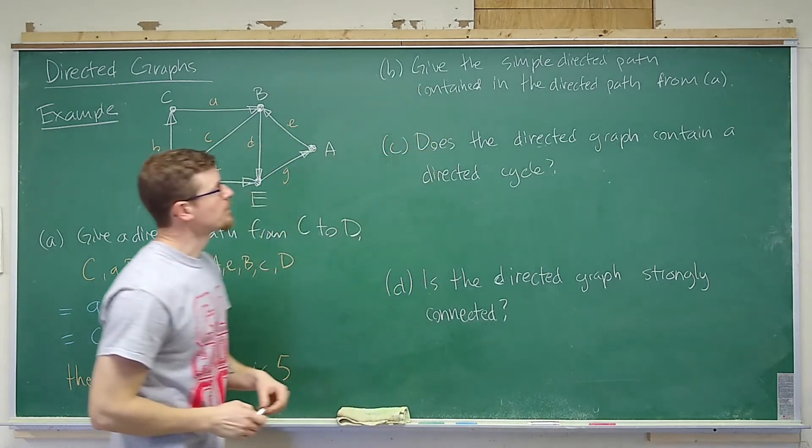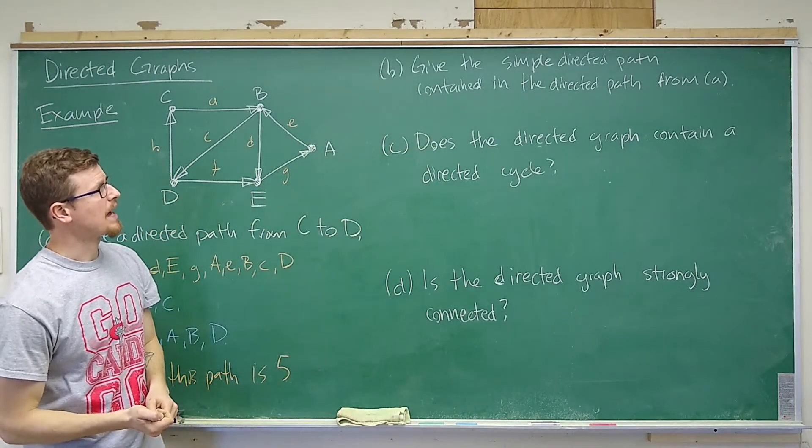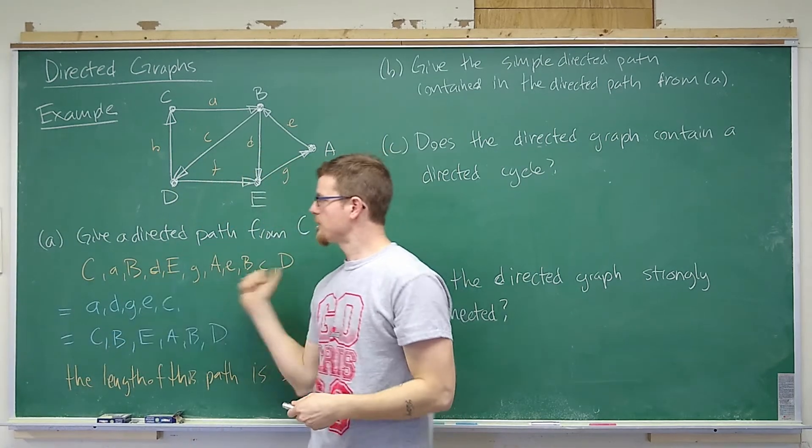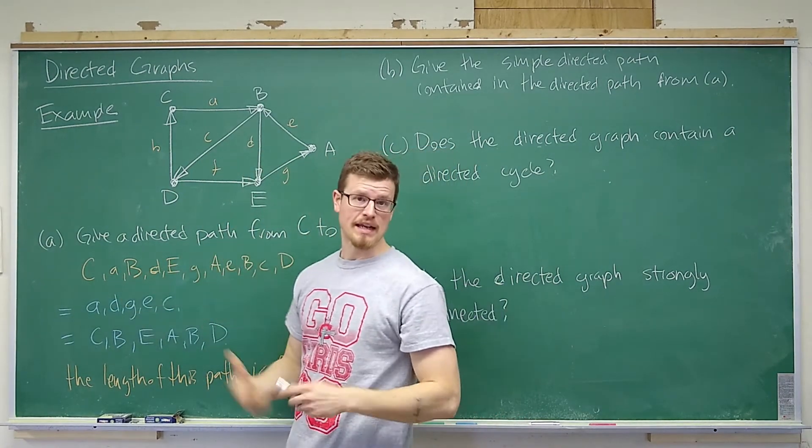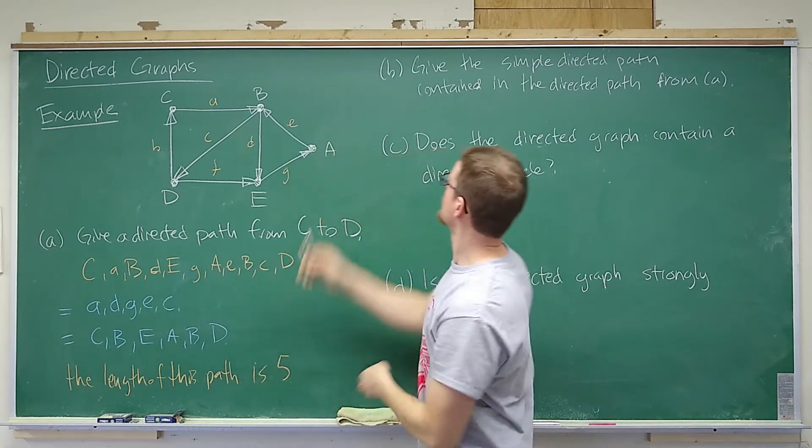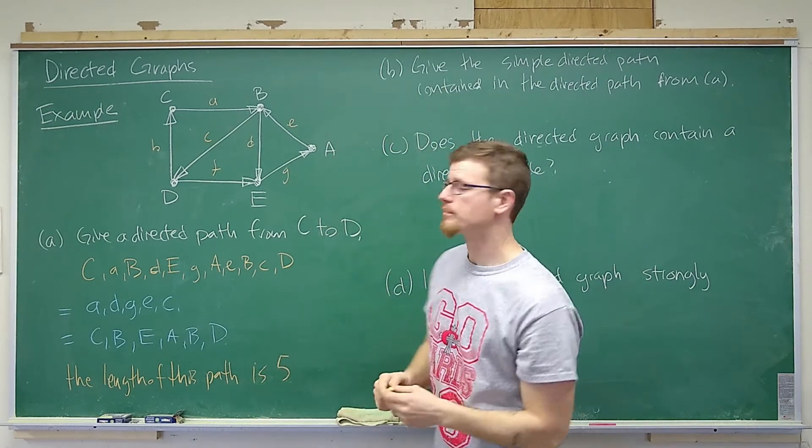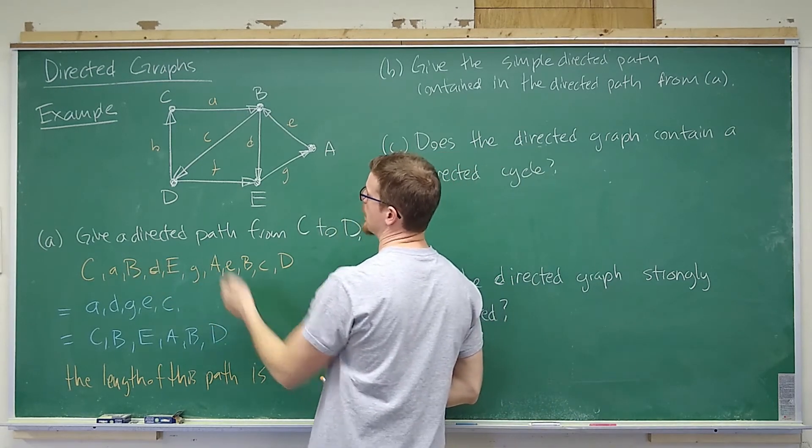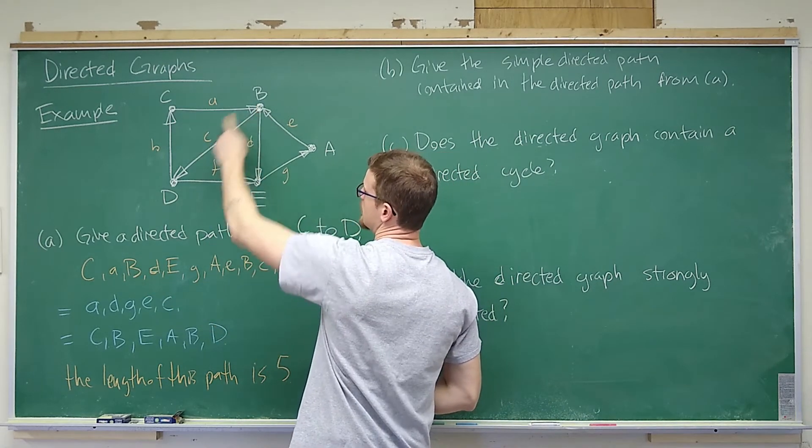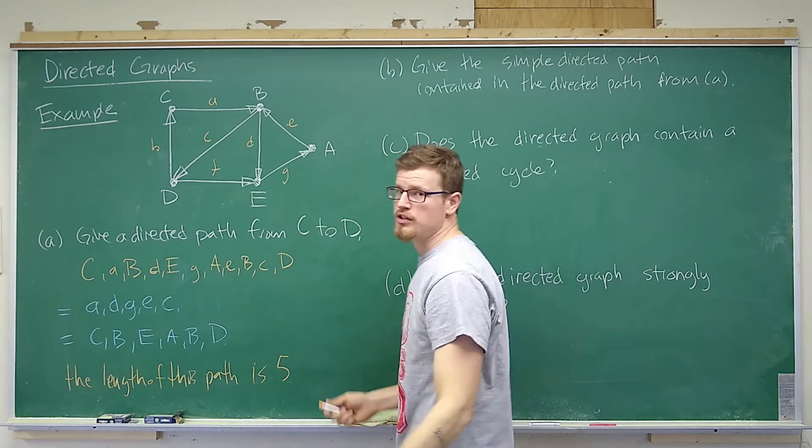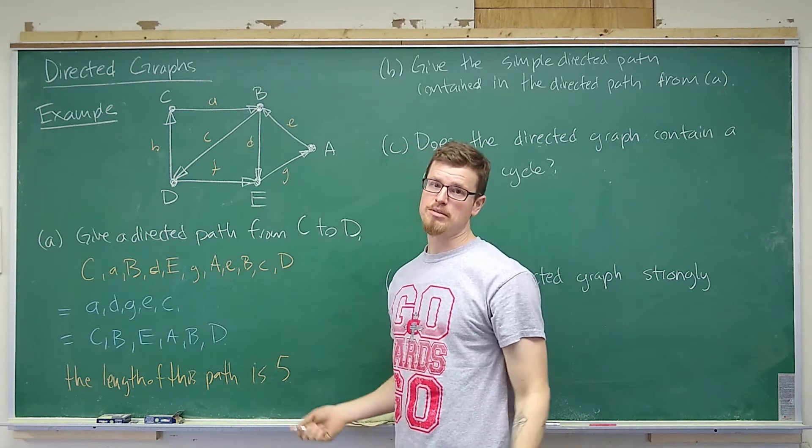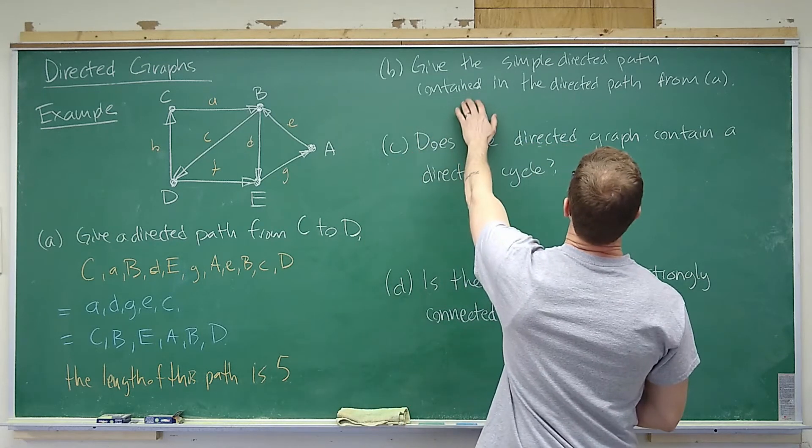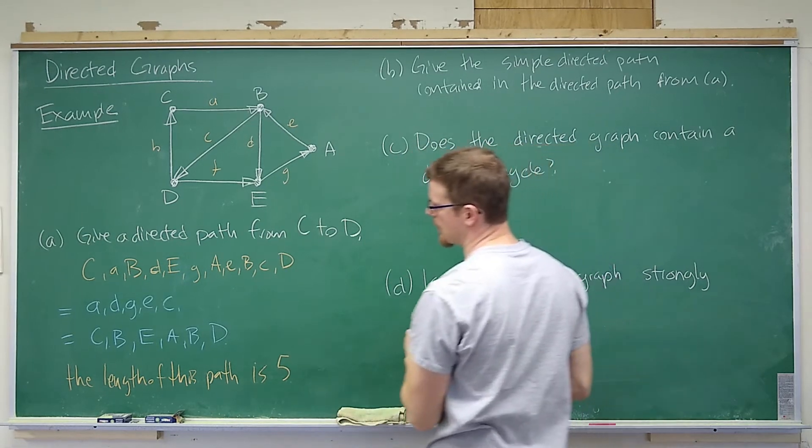For the next question, we have give the simple directed path contained in the directed path from A. So here we have a directed path, and I made it longer than I needed to. That's because I wanted to have something to give here in part B. So I could have made this much shorter by just traveling from C to B and then B to D. So what we wanted to exhibit here is that every directed path contains a simple directed path.